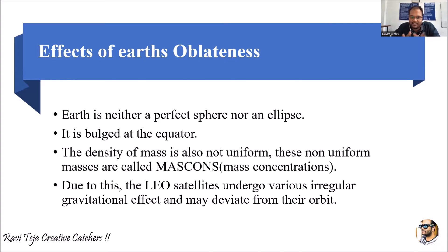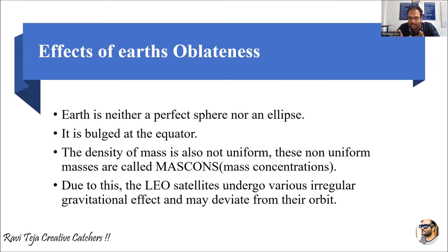Coming to the effects of Earth's oblateness — Earth is neither a perfect sphere nor an ellipse. What we all think, that the Earth is a complete circle in shape, is not true. It will have a little bit of a bulge at the equator — the equator meaning the middle. If you observe the Earth or the globe carefully, it will have a bulged structure at the equator.